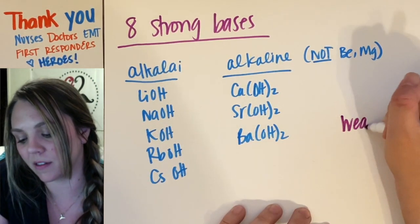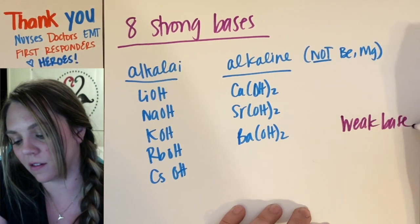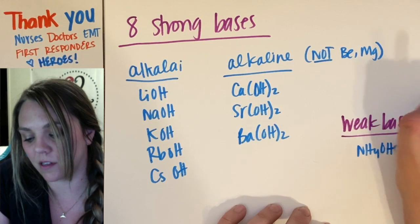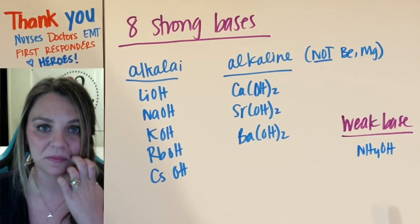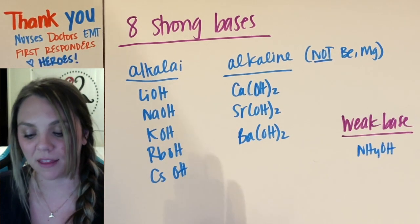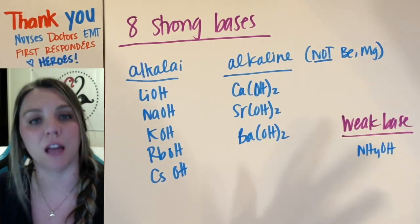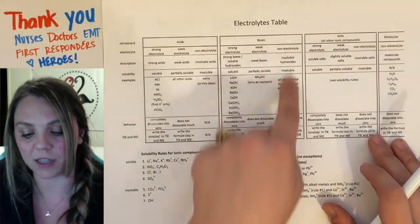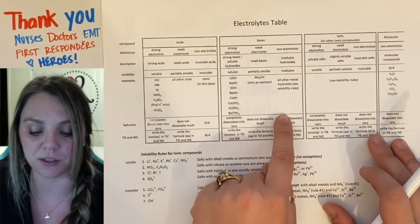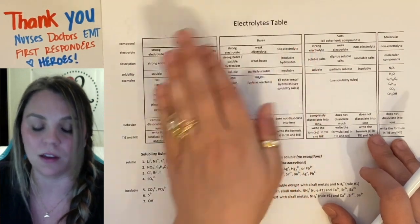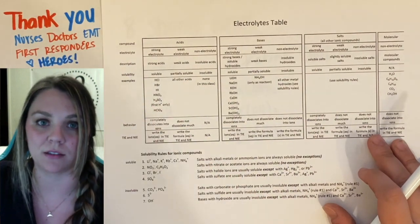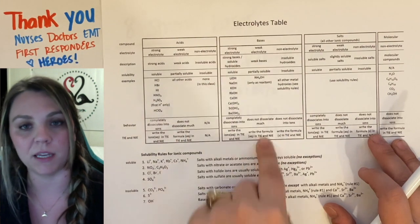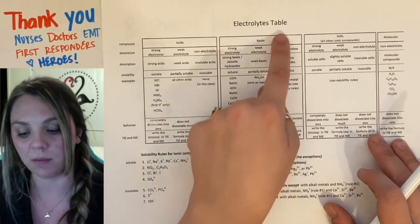Your weak base is going to be ammonium hydroxide. And then you're going to have a lot of insoluble hydroxides — so there are a lot of non-electrolytes for your bases, which is very different from your acids. Acids are always electrolytes, either strong or weak. Bases — not so much.